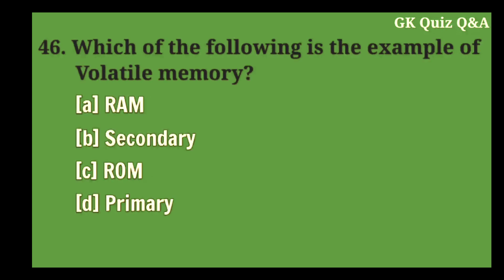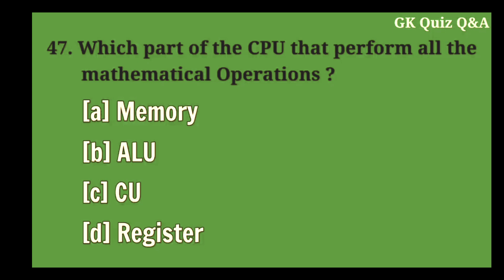Which of the following is the example of volatile memory? Answer A: RAM. Which part of the CPU performs all the mathematical operations?